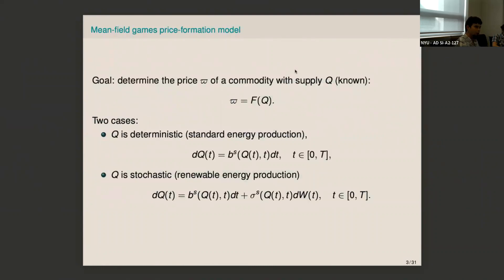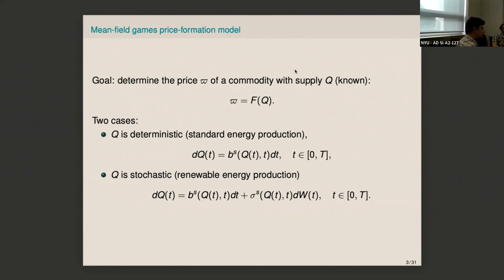I'll start by introducing the problem of price formation. Assume you have a commodity — think of energy — and you want to price that commodity in a market with agents or players who buy and trade energy. We want a map F such that for a given supply, you obtain the price. We distinguish two cases: the first is when the supply Q is deterministic, following an ODE.